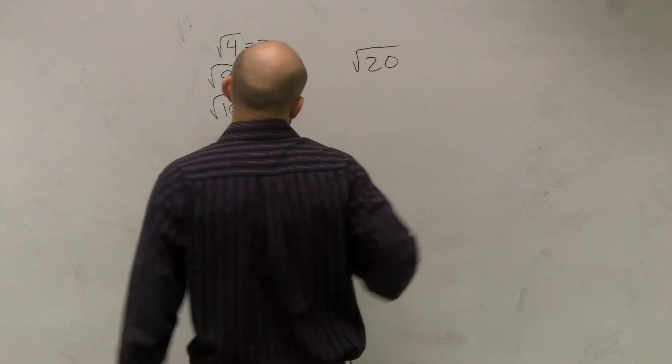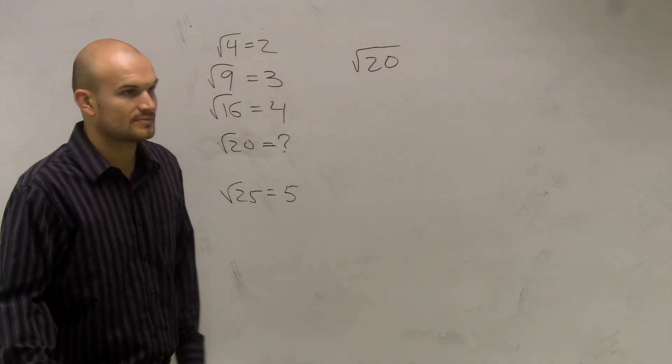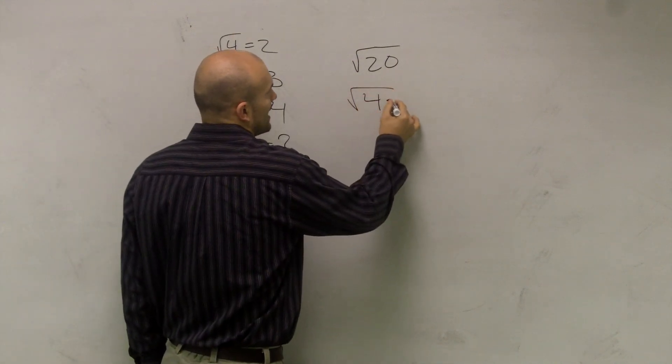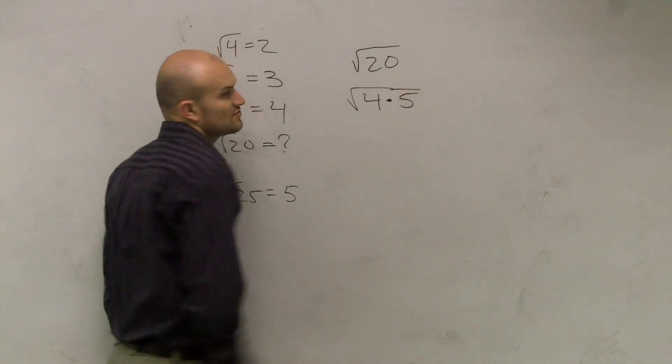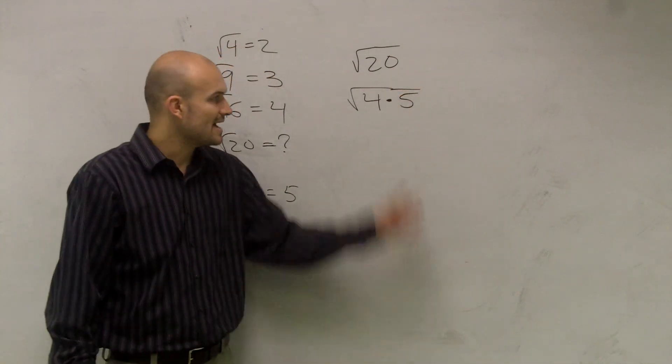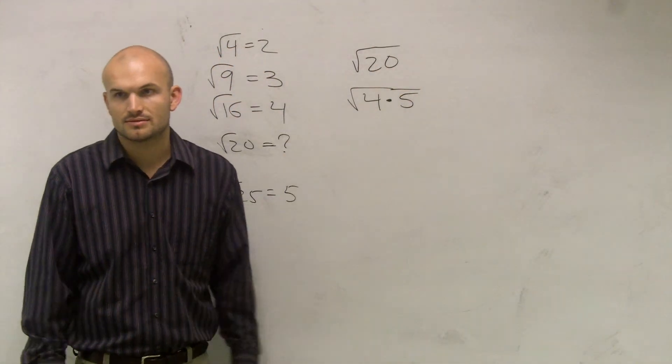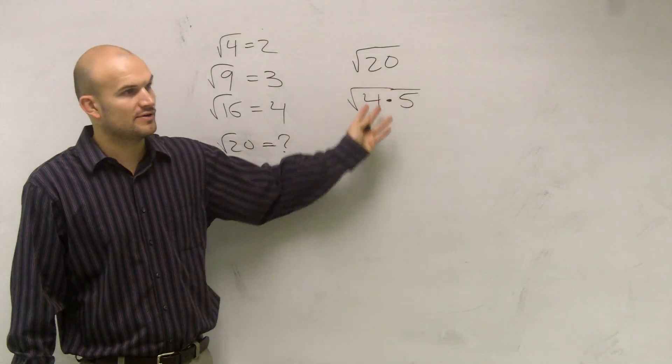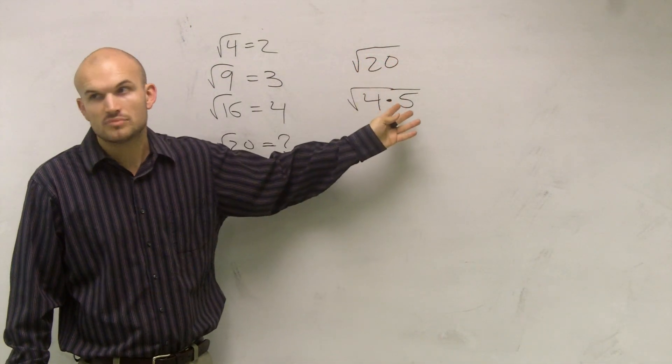Now, what I can do is use a certain set of rules, and this is what I just need you guys to agree upon. I can rewrite the square root of 20 as 4 times 5. Mathematically, is that equivalent? You guys think about this. 4 times 5 equals 20? Yeah, so does it matter if I rewrite it like that or not? No, it doesn't.